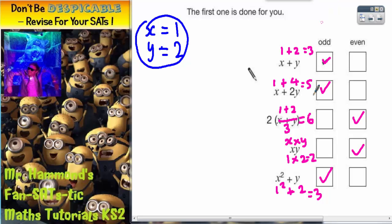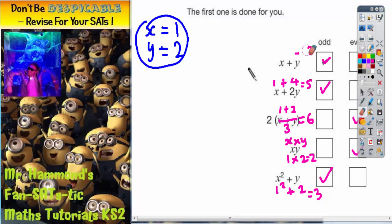Now you may be thinking, well, that only works for when x is 1 and y is 2. Well, let's see what happens if we'd picked some different numbers. Remember, we still have got to get x being odd. We've still got to have y being even.